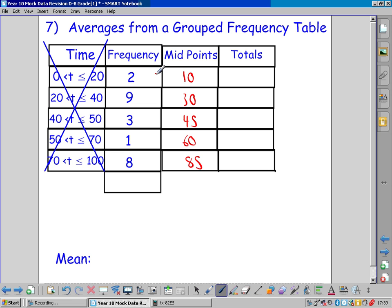We reckon that 2 people took 10 seconds or minutes, 9 people took 30, 3 took 45, 1 took 60, and 8 took 85. So we multiply across. 20, 270, 135, 60.